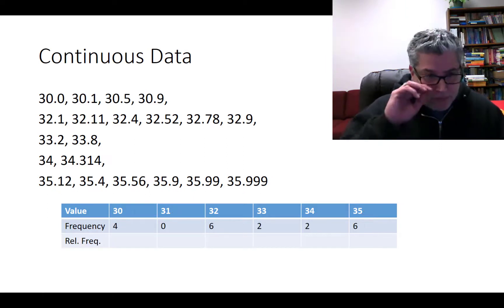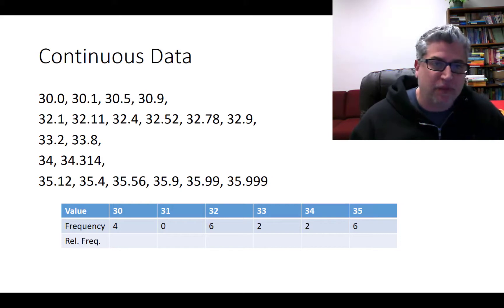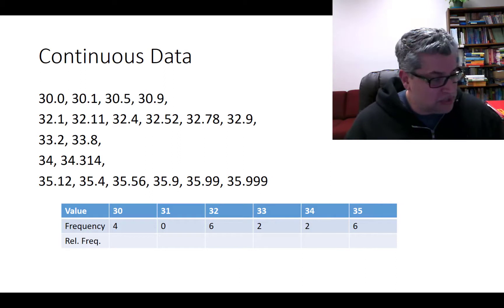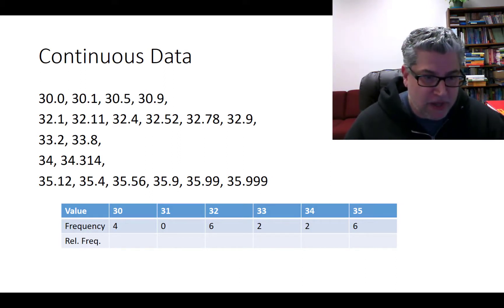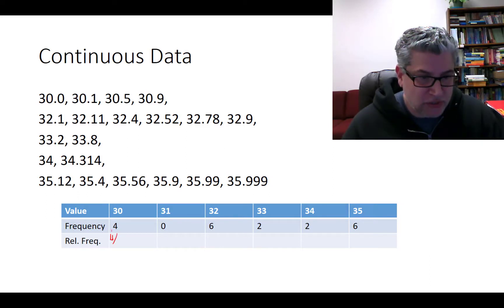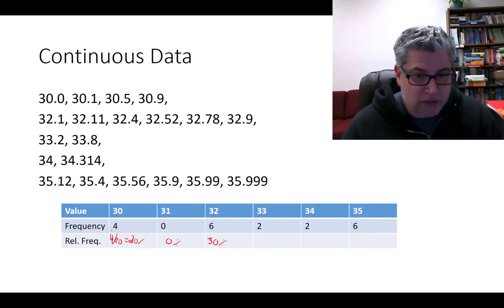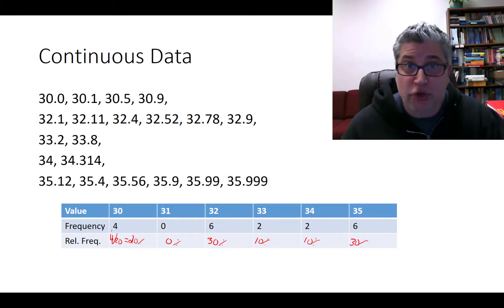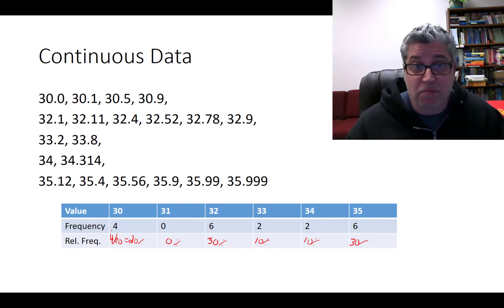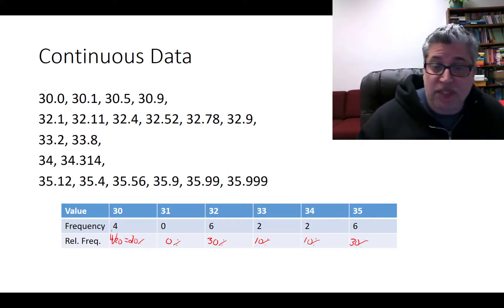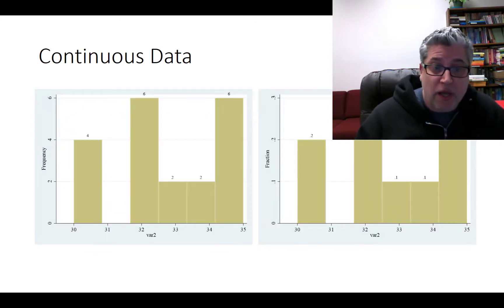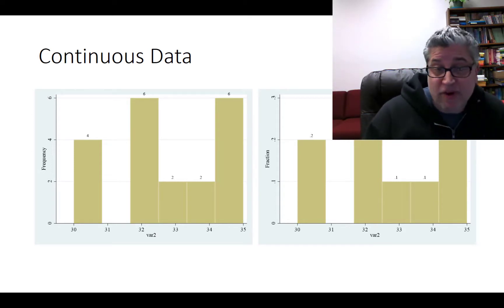My penmanship is horrible, so I've typed it out. Now we can calculate relative frequencies, just like before. We've got 20 observations, so the math is pretty straightforward. Four out of 20 is 20%. Zero percent for 31s. Six out of 20 is 30%. Two out of 20 is 10%, another 10%, and again six out of 20 is 30%. So now we make bars proportional to these frequencies or relative frequencies — and that's what we've got here. It's a bar chart, just frequencies and fractions, just like before.